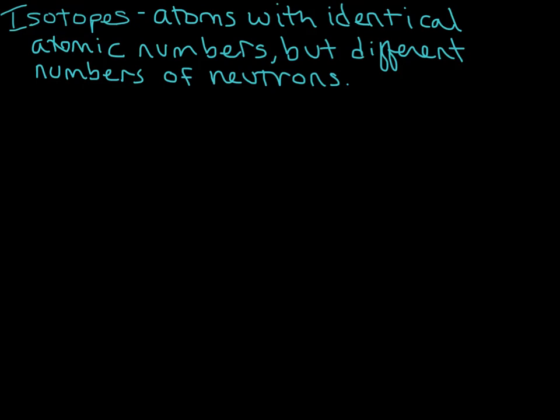Let's do some isotope examples. Remember that isotopes are atoms with identical atomic numbers but different numbers of neutrons. Let's also remind ourselves of the elemental symbol — the ways that we represent isotopes.